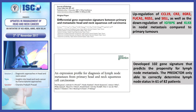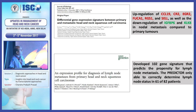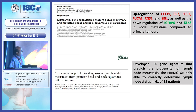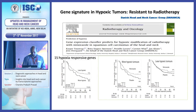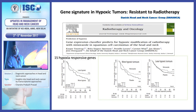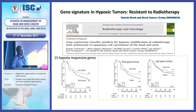Two additional studies showed different types of genes associated with nodal metastasis compared to primary tumors. A 2005 study developed a 102-gene signature that predicts propensity for lymph node metastasis, with predictors able to correctly determine nodal status in 61 out of cases evaluated.